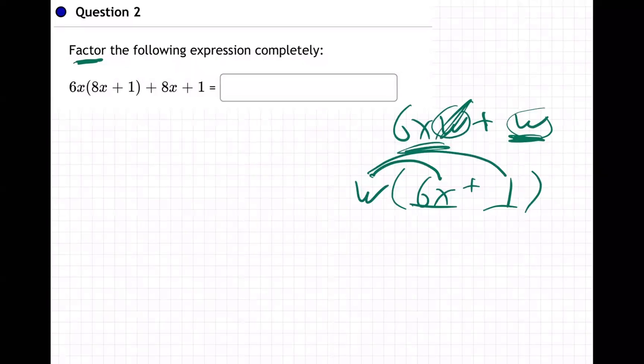If we go back here, see this 8X plus 1? What will help you see what needs to be done even better? If I put a one here in front of this W, then it would have been more obvious that a one is remained. And that doesn't change anything, right? One times W is still just W.